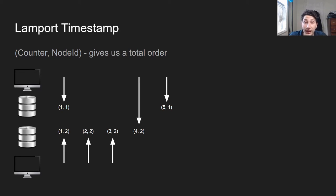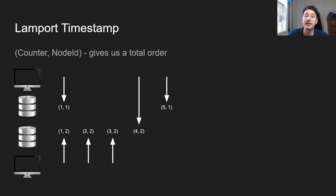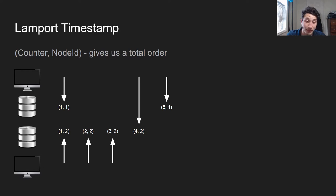Now the top client makes yet another write, but it's writing to the bottom replica. Instead of that write being numbered 2,2 — because the top client has only seen counter 1 before — the second the top client encounters a higher counter than its current one, so it sees counter 3 on that second database, it takes the maximum of what it's seen so far and the maximum counter on that replica. As a result, it increments itself all the way to 4. And when it finally makes another write to replica 1, we write with counter 5 to replica 1.